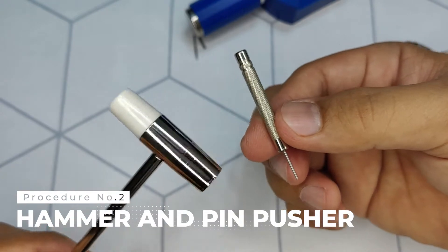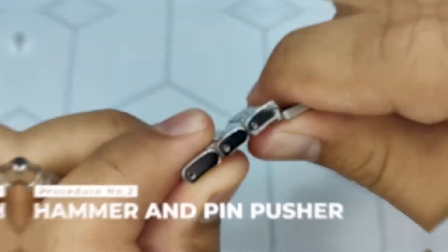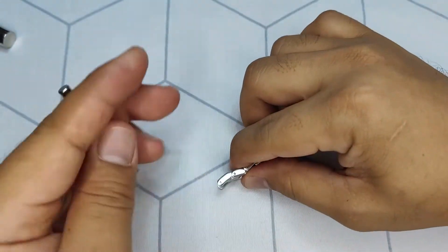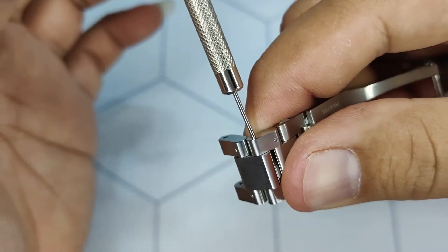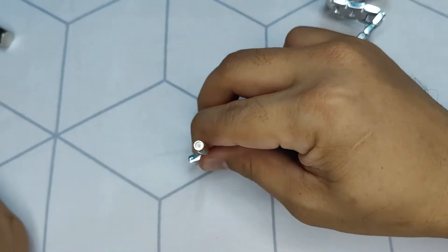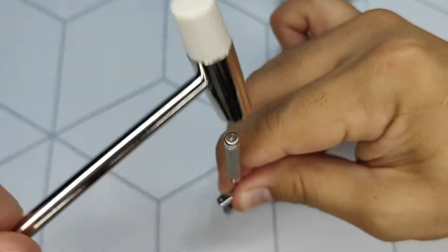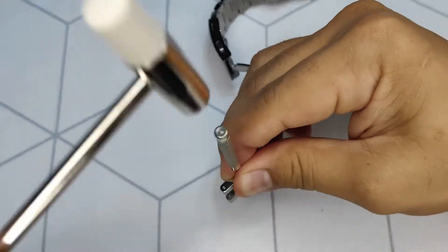Now let's proceed with the removal of links using the second procedure using a watch hammer and a pin pusher. Secure the bracelet firmly by the side on the table or any suitable hard plastic that will not scratch your watch. Center the pin pusher on the link pin slot. Once in position, start striking the pusher with the watch hammer.